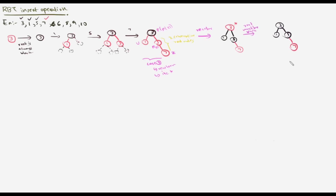Let me insert 6. Every newly inserted node is red. I initially placed 6 incorrectly — 6 must be inserted as the left child of 7, not on the other side. Now we have two consecutive red nodes again, so we must fix this.